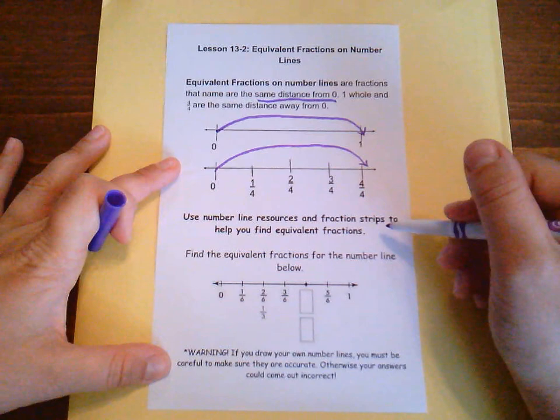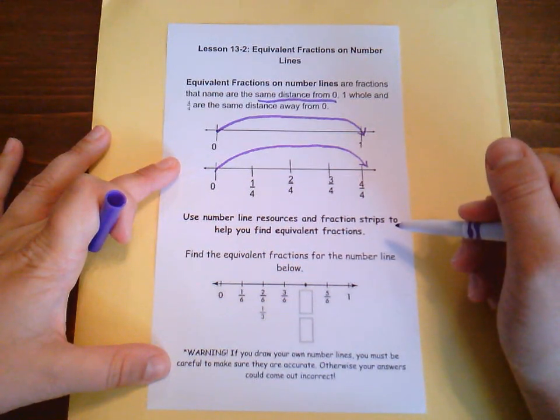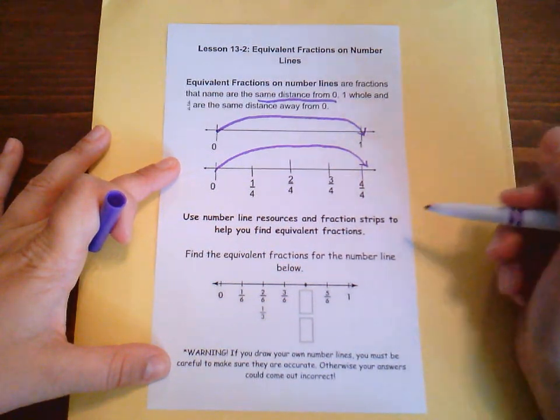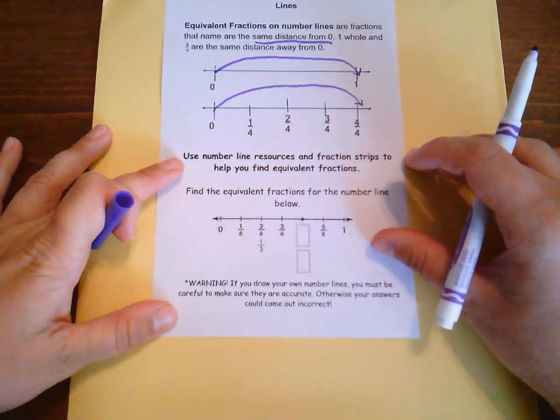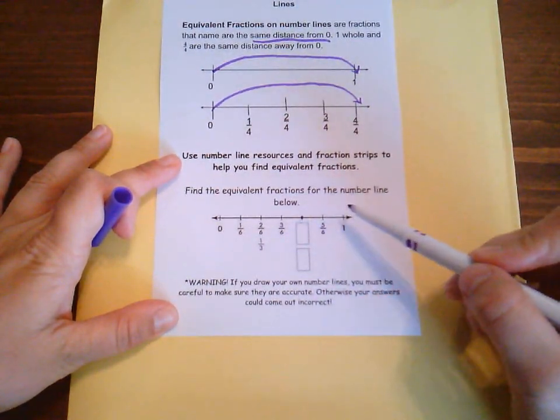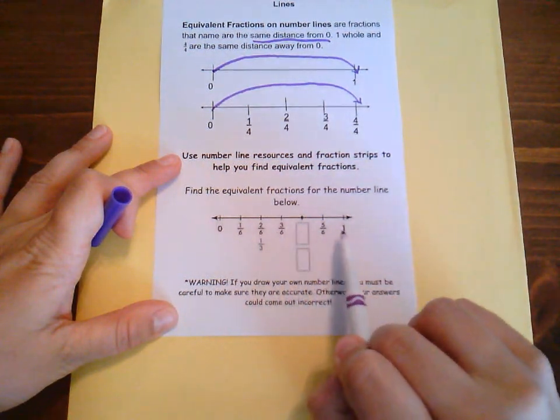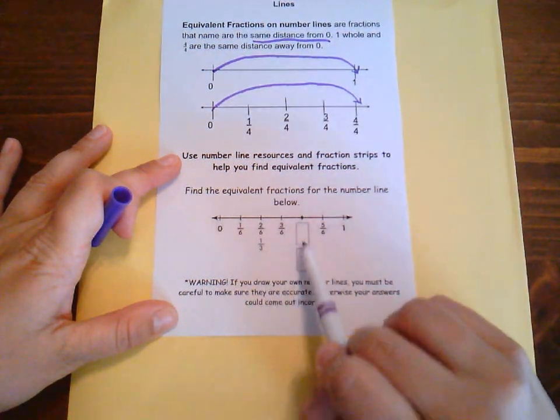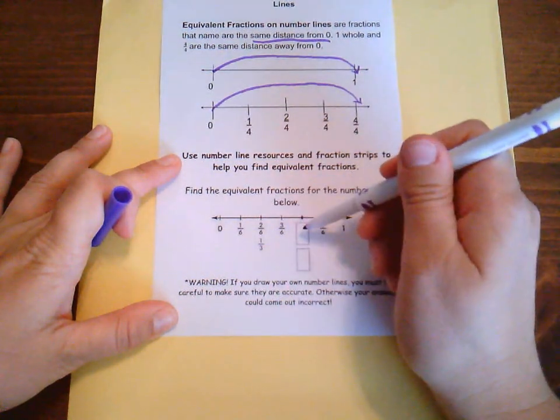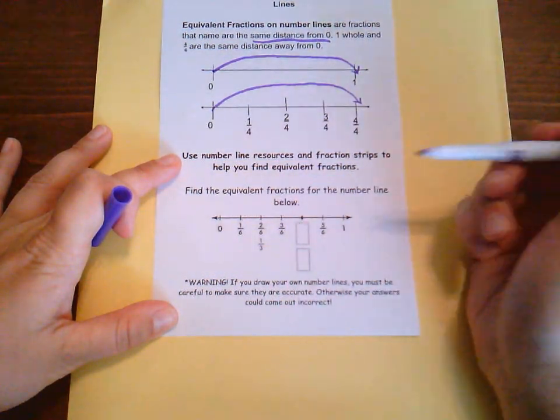Now you're going to want to use your number line resource and fraction strips to help you find equivalent fractions. So down here, we want to find the equivalent fractions for the number line below. So I notice that up here we're talking about sixths, and down here we're talking about thirds. So I want to know what two numbers are going to go here.